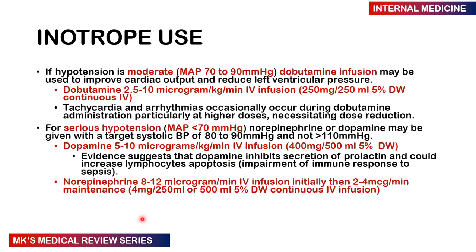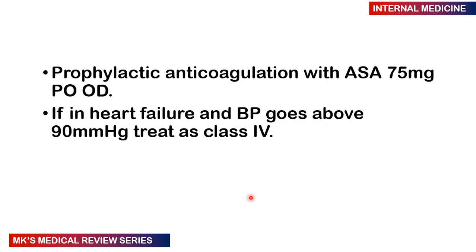Norepinephrine can be given at 8 to 12 mcg/min IV infusion, followed by 2 to 4 mcg/min as a maintenance dose — prepared as 4 mg norepinephrine added to 250 or 500 mL of 5% dextrose in water as a continuous infusion. For prophylactic anticoagulation, give aspirin 75 mg orally once daily. If the patient is in heart failure and BP goes above 90, treat as class 4 heart failure.